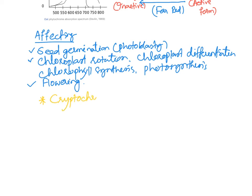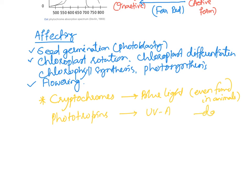Other plant photoreceptors include cryptochromes, which respond to blue light and are even found in animals. Phototropins respond to UVA light. UVR8, or UV-resistance safe, provides protection particularly against UVB light, and it is also found in animals. This is what is needed to know about phytochrome for the exam.